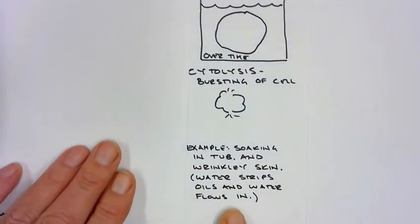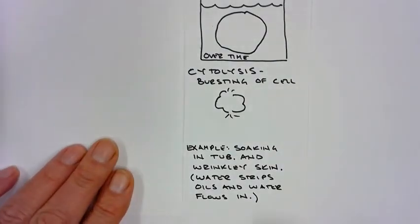For example, if you soak in the tub and you get that wrinkly skin, water basically strips oils and water flows into your cells. Also, this is why if you get an IV of a saline IV, it has some salt in it so your cells don't swell and burst.